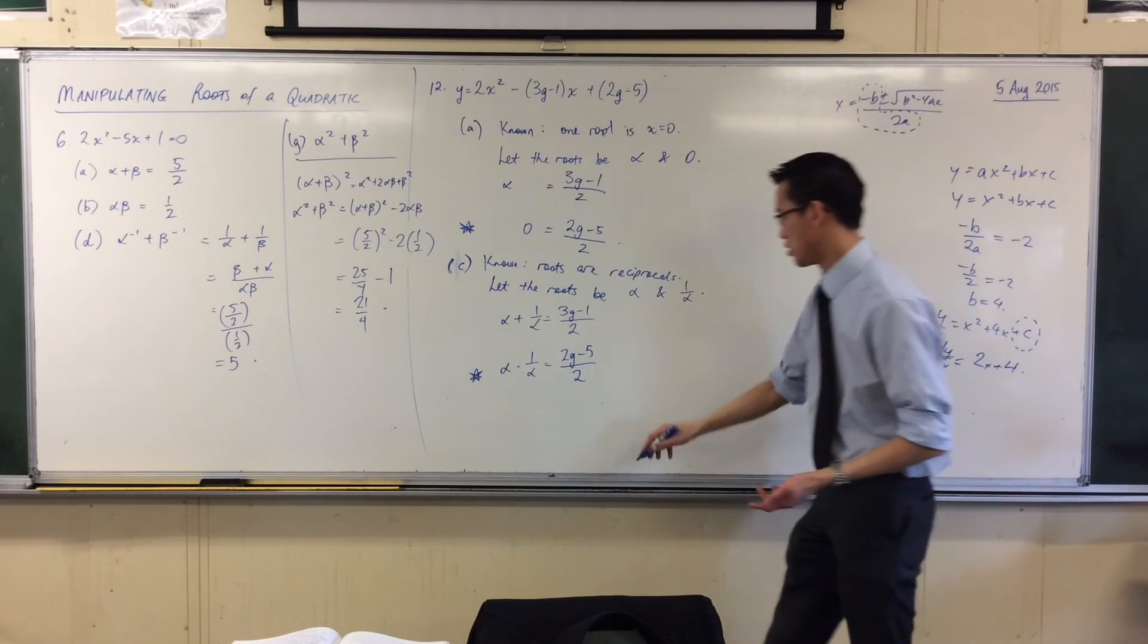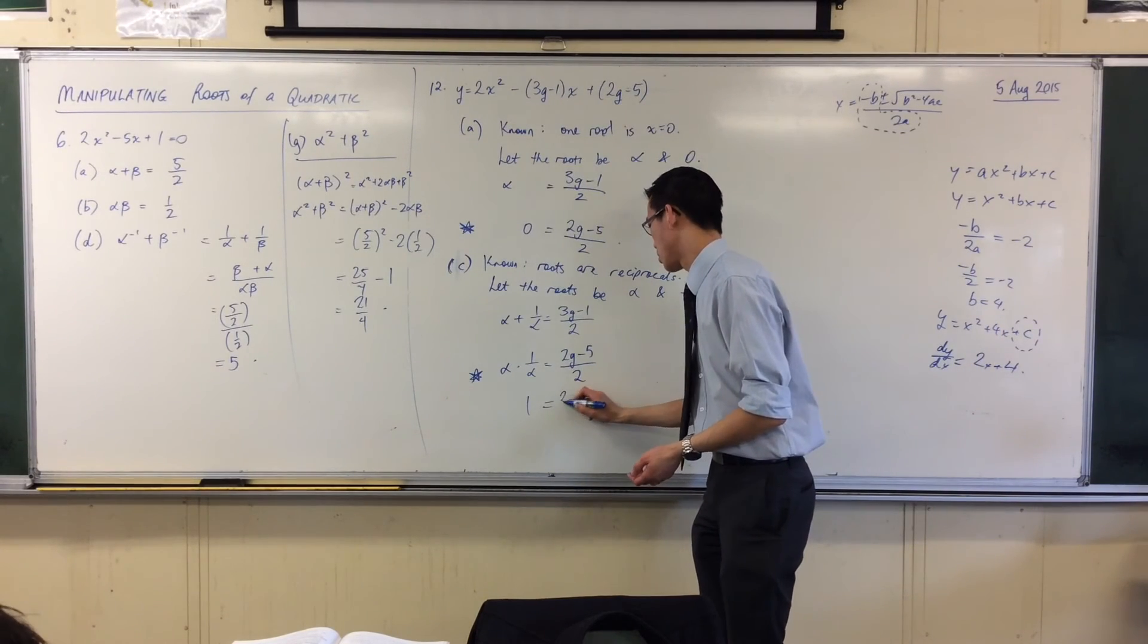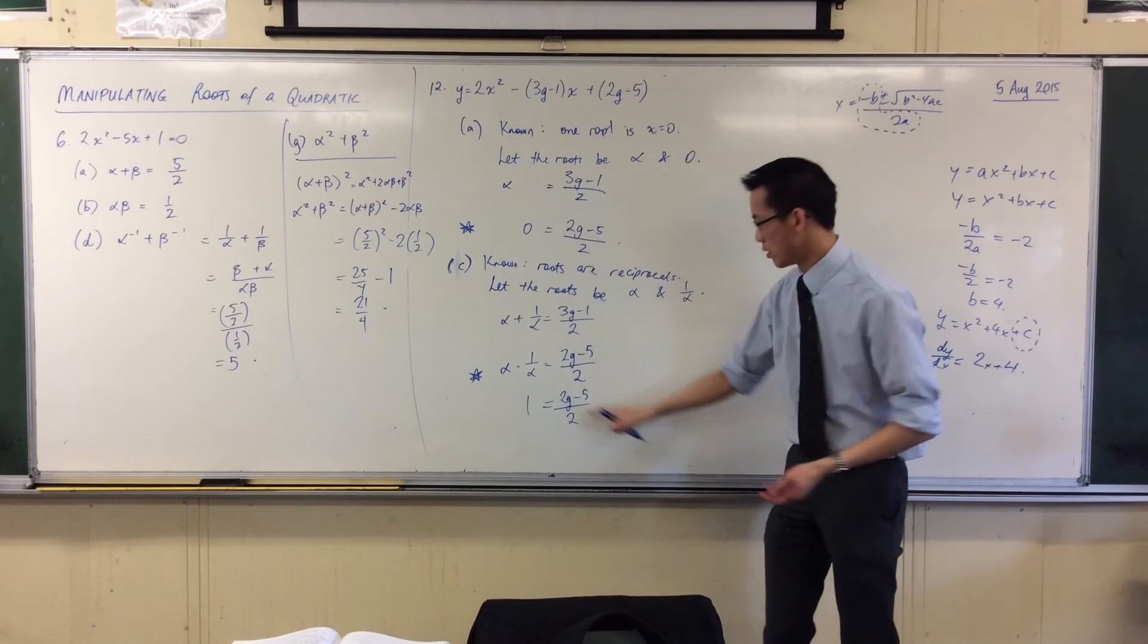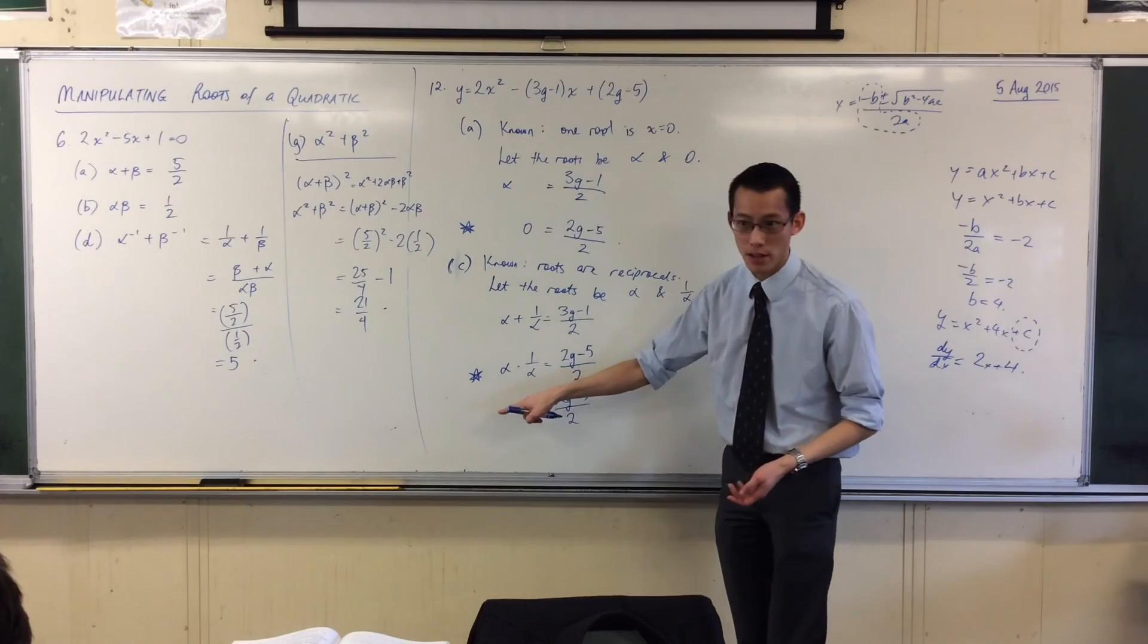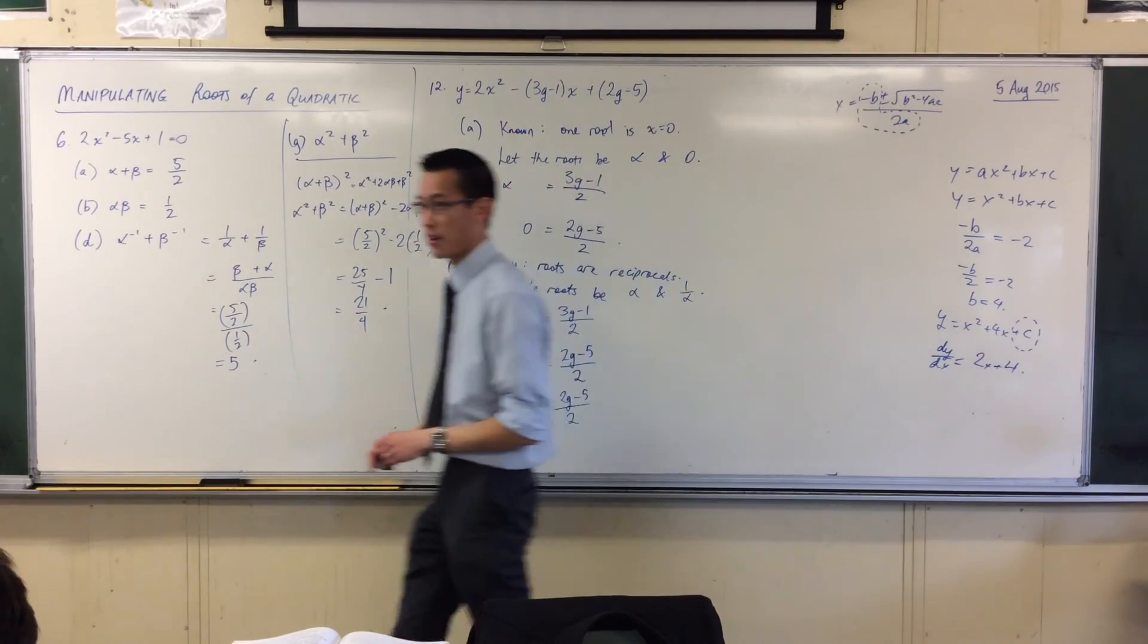Let's just quickly finish this off. You're going to get 1 equals 2g minus 5 on 2, so 2g minus 5 is going to be equal to 2, so 2g equals 7, so g is 3 and a half.